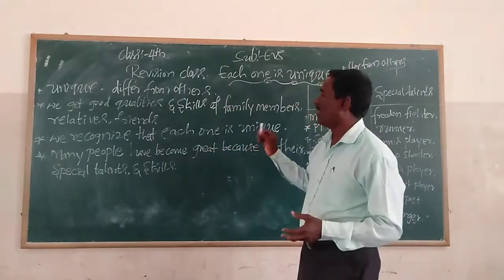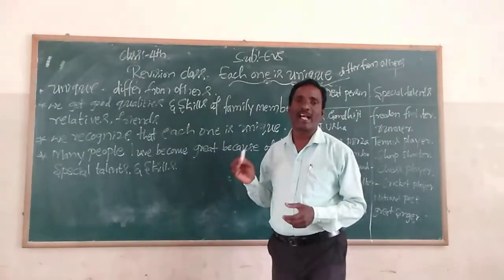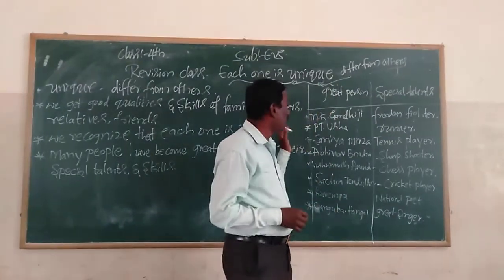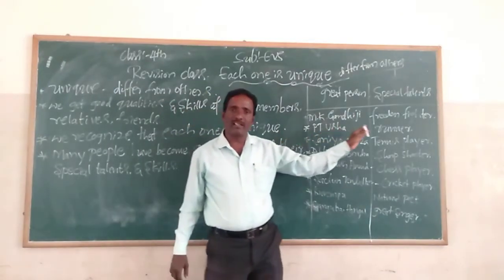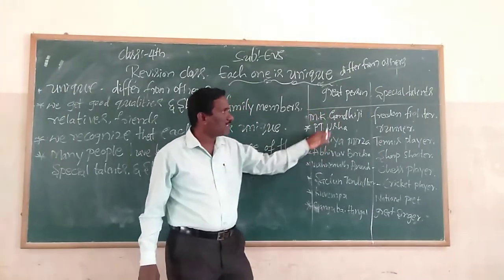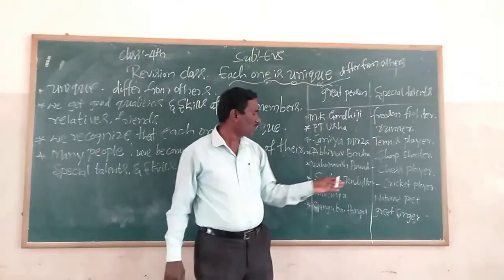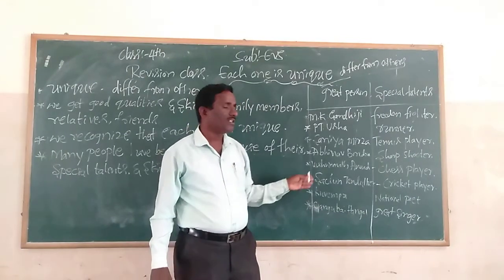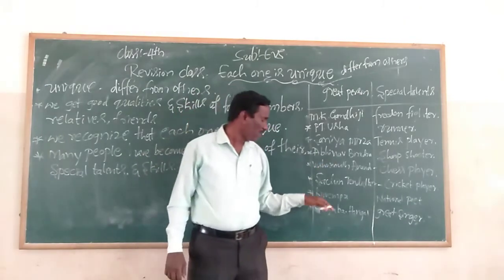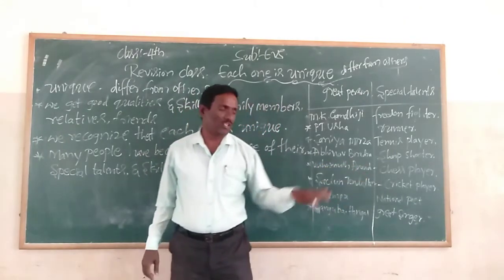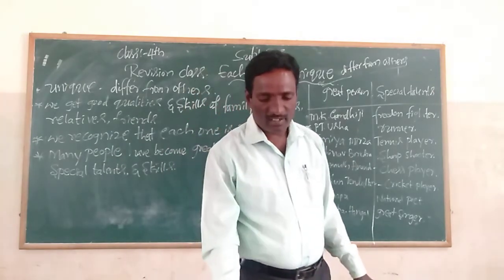Many people became great because of their special talents and skills. For example, M.K. Gandhi, a great freedom fighter. P.T. Usha, a great runner. Abhinav Bindra, a sharp shooter. Viswanathan Anand, a great chess player. Sachin Tendulkar, a great cricket player. Kuvempu, a great national poet. Gangubai, a great singer.